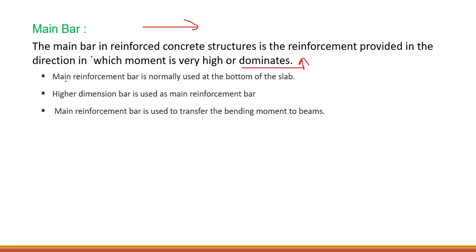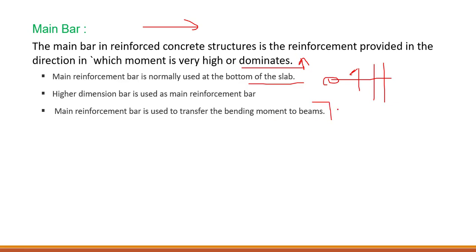The main reinforcement bar is normally used at the bottom of the slab. First we will have the main bar, then on top we will have the distribution bars. A higher diameter bar is used as the main reinforcement bar, meaning the main bar diameter will be greater compared to distribution bars. The main reinforcement bar is used to transfer bending moment to the beams. Hope you understand what is the main bar.